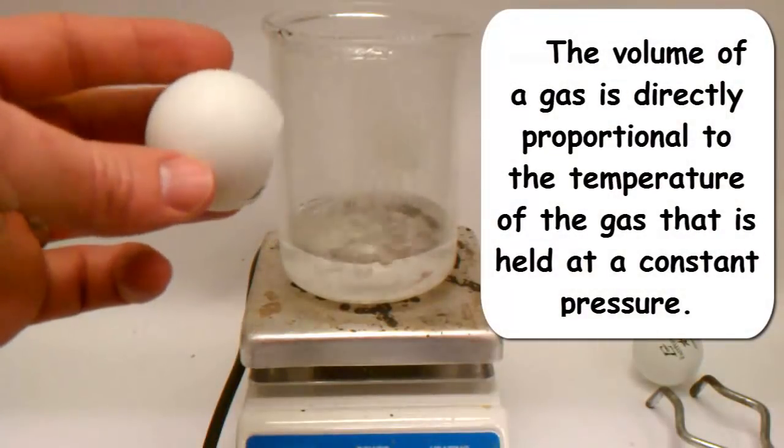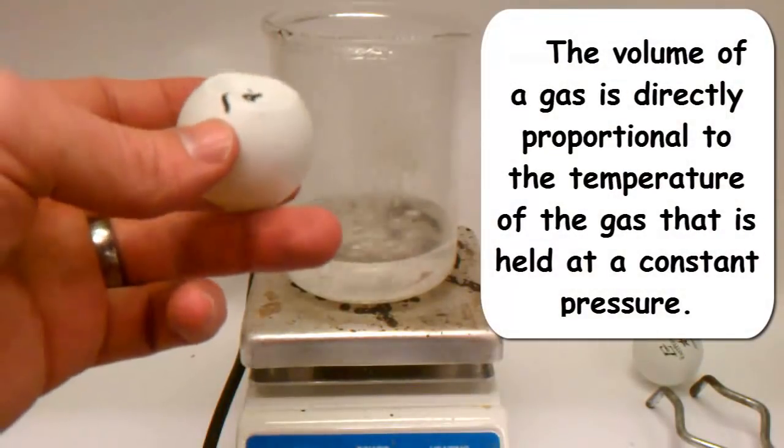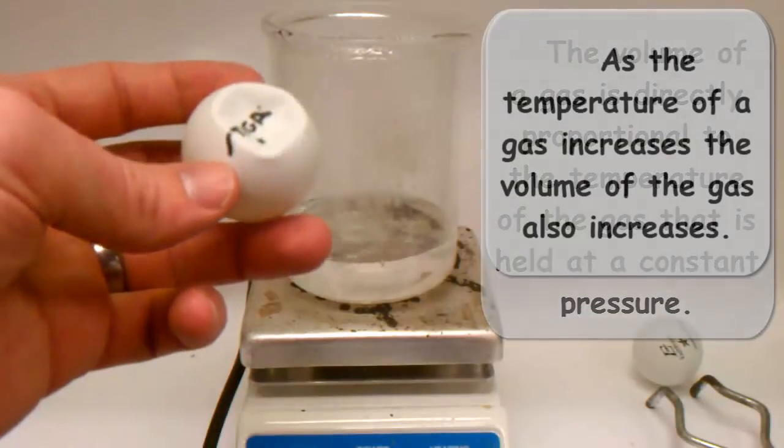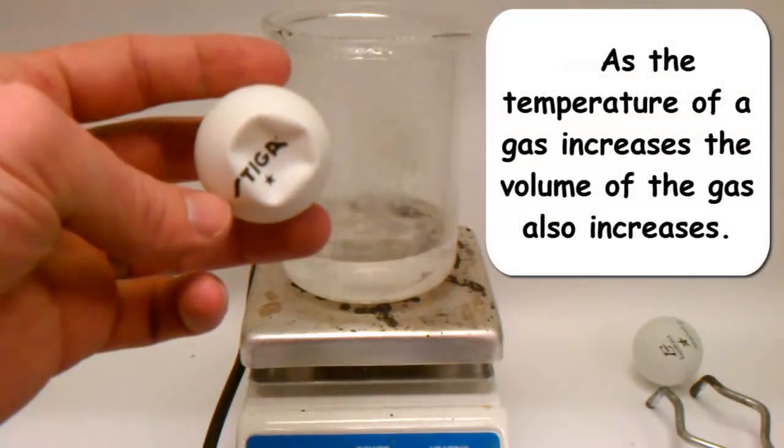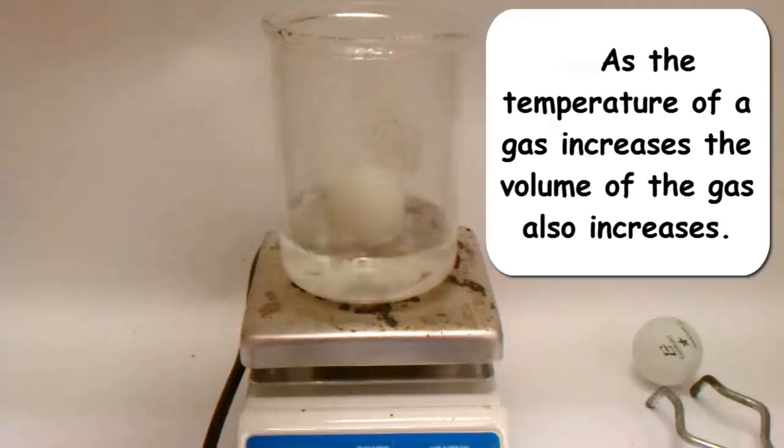Charles Law states that the volume of a gas is directly proportional to the temperature of the gas that is held at constant pressure. Another way to say this is that as the temperature of a gas increases, the volume of the gas also increases.